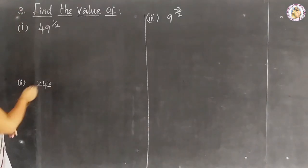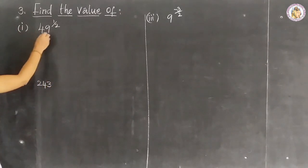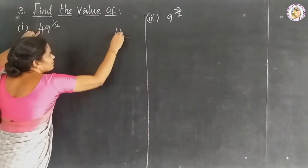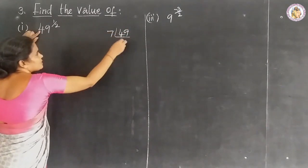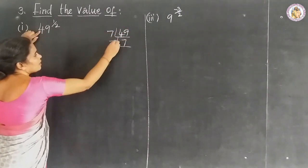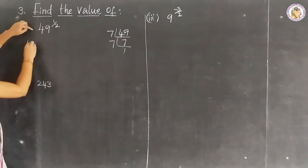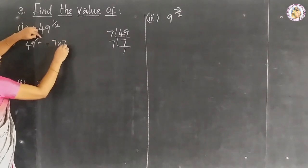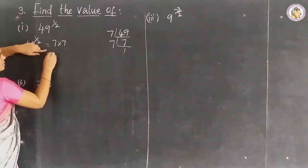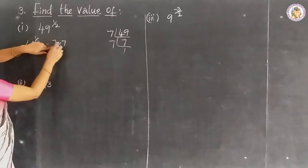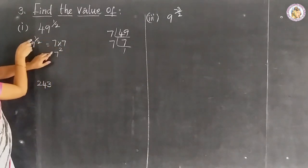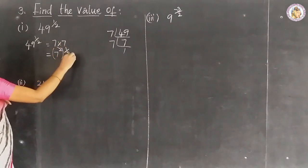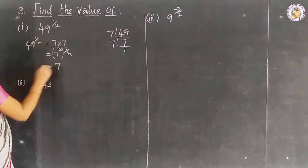Question number 3: find the value. Sub-question 1: 49 to the power of 1 by 2. Finding factors of 49 — 7 sevens are 49. So 49 to the power of 1 by 2 equals (7 × 7) to the power of 1 by 2 equals 7 squared to the power of 1 by 2. The 2s cancel, giving the answer equals 7.